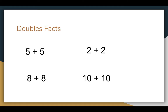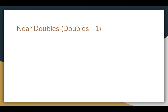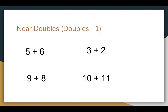Now that we've reviewed what doubles facts are, we're going to learn about near doubles, or doubles plus one. Here are some examples of near doubles: five plus six, three plus two, nine plus eight, and ten plus eleven. These are near doubles because each is one away from a doubles fact. We can look at the lower number, add one, and find the sum.